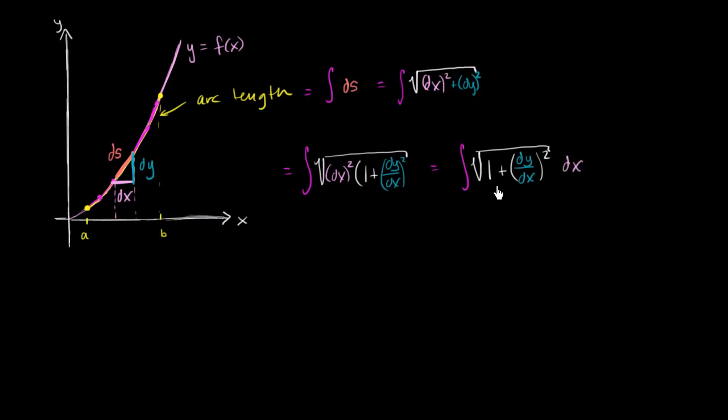Now this is really interesting because we know how to find this between two bounds. We can now take the definite integral from a to b. Since now we are integrating a bunch of dx's, or we're integrating with respect to x, we can say x equals a to x equals b. Let's take the sum of the product of this expression and dx. And this is essentially the formula for arc length.